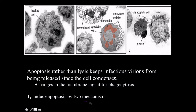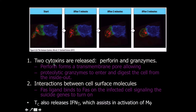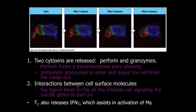Cytotoxic T cells induce apoptosis by two specific mechanisms. First, cytotoxins are released — specifically perforin and granzymes. Perforin opens a hole in the cell membrane, allowing granzymes to enter and digest the cell from the inside out. Second, signals are induced to turn on suicide genes — apoptotic genes. This is done by the FAS ligand binding to the FAS receptor on the infected cell.